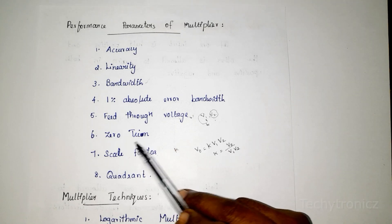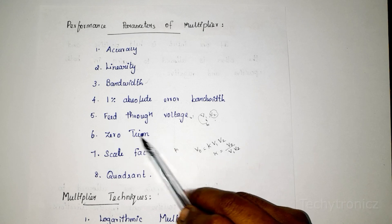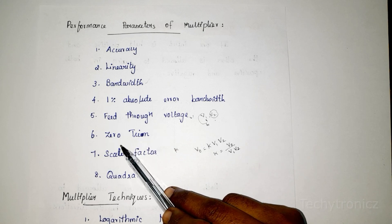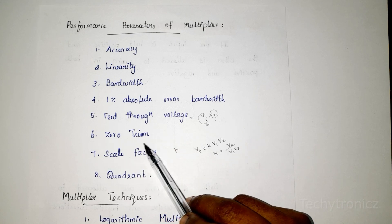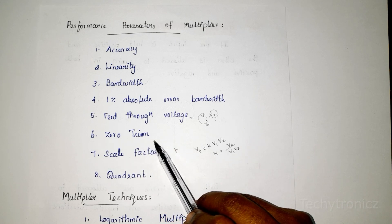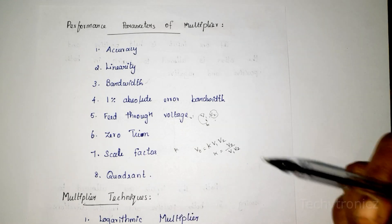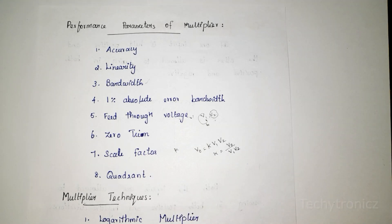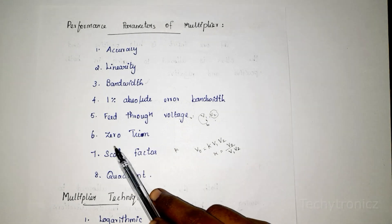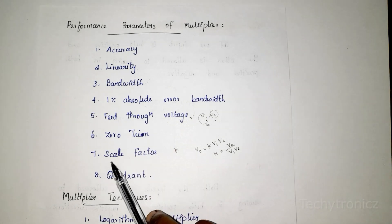Zero trim is the ability of the multiplier to set the feed through voltage at the output to zero.